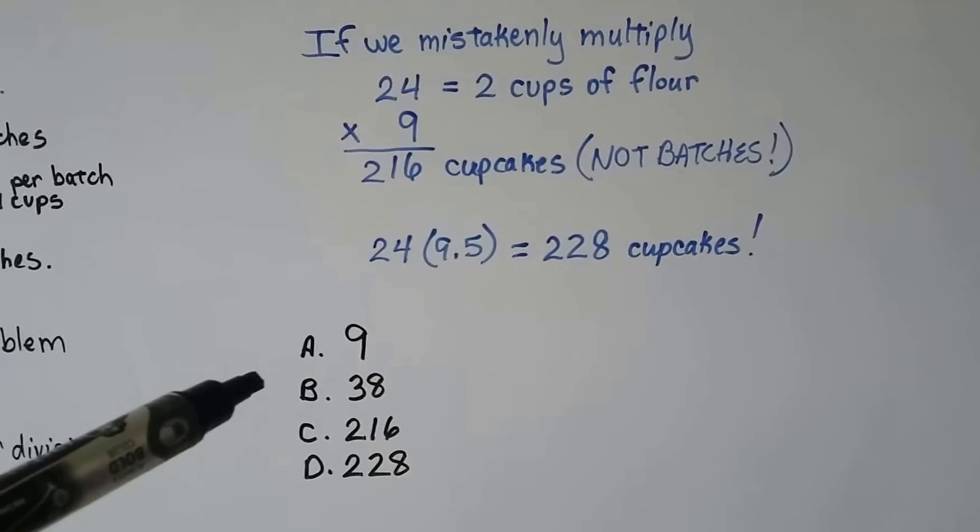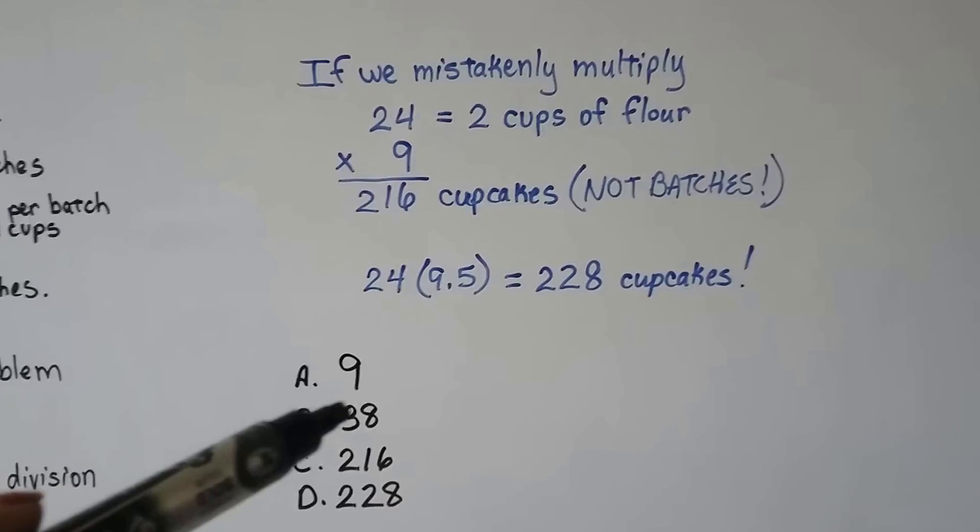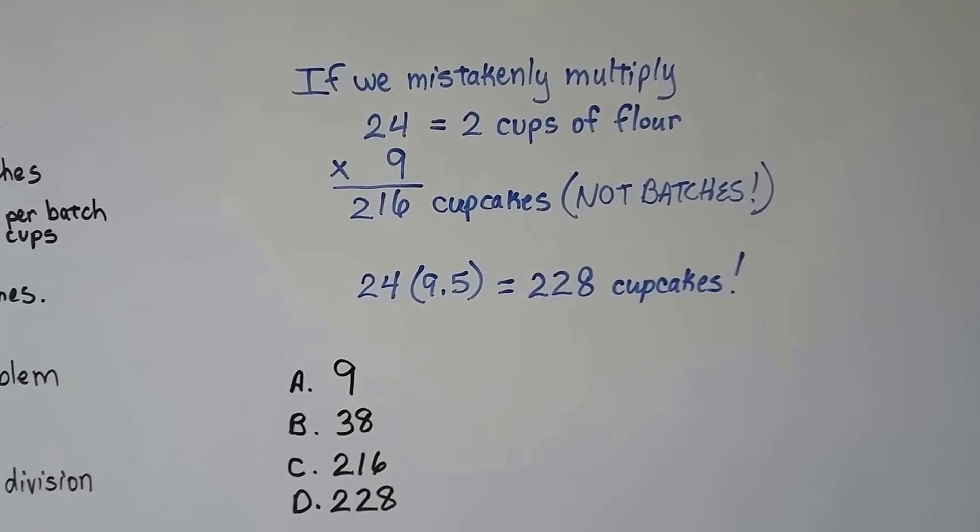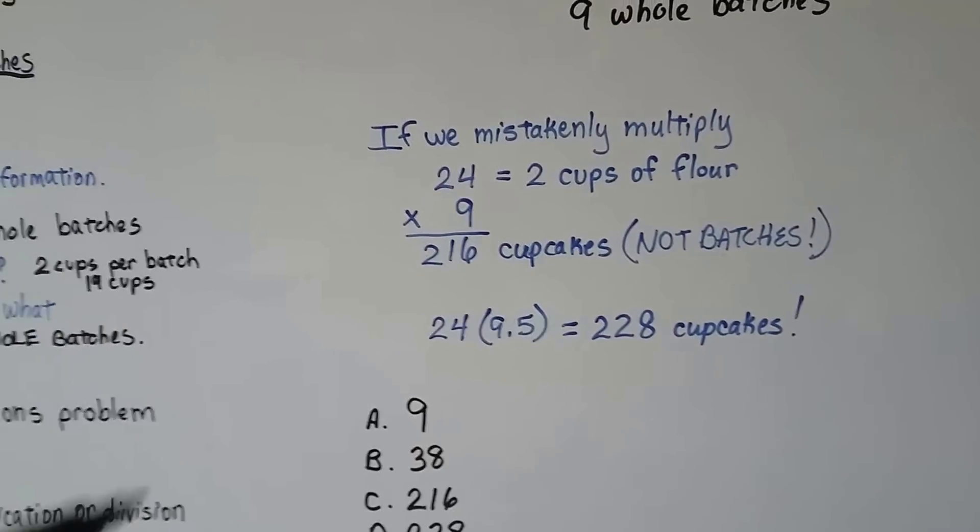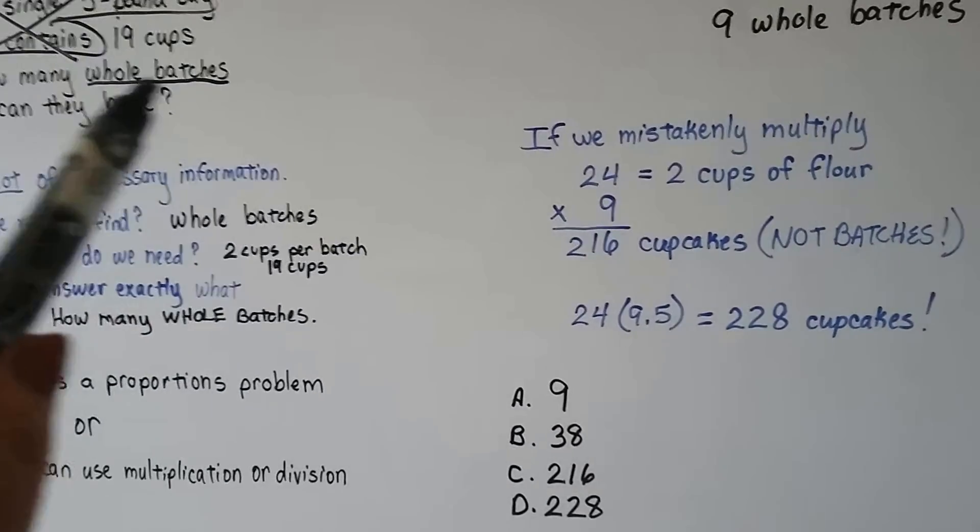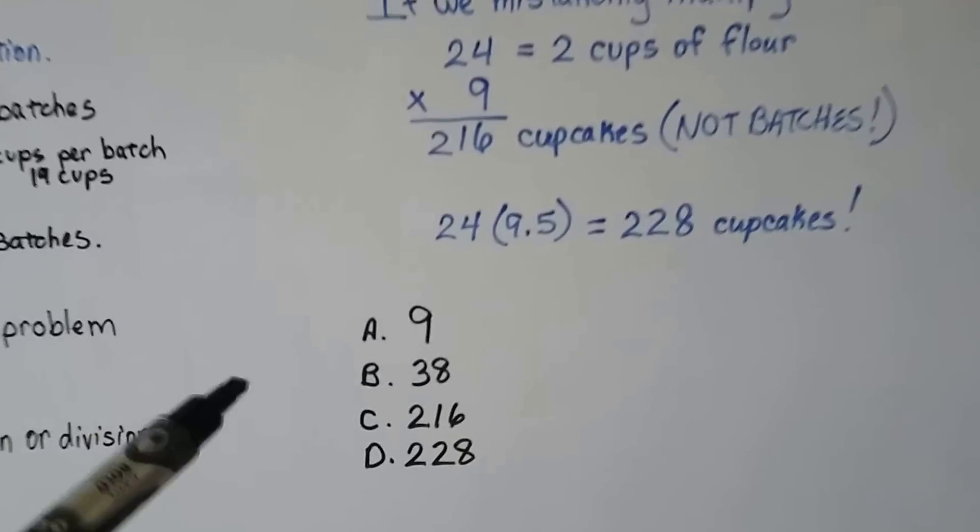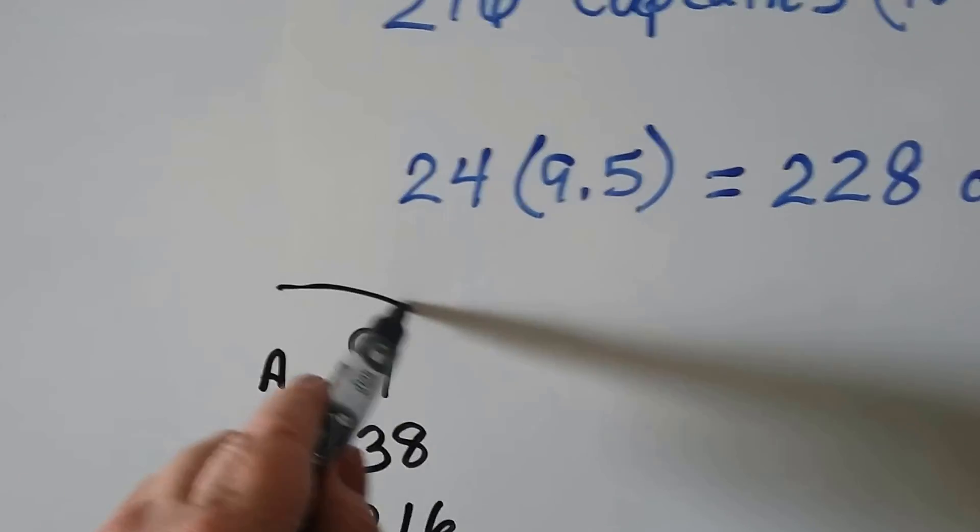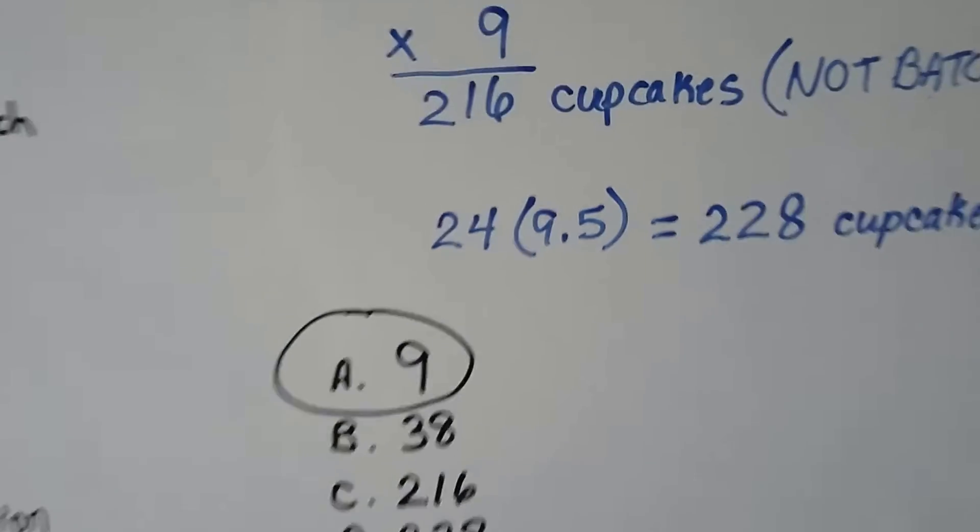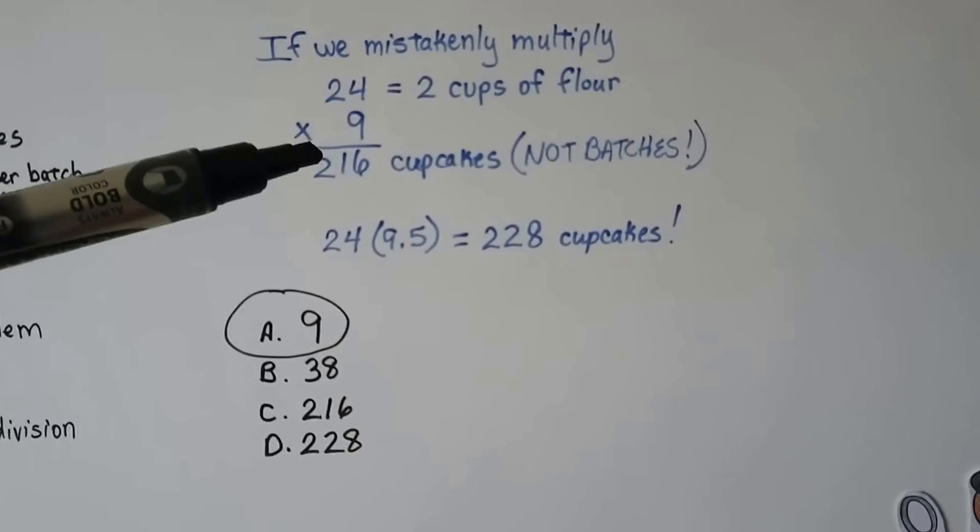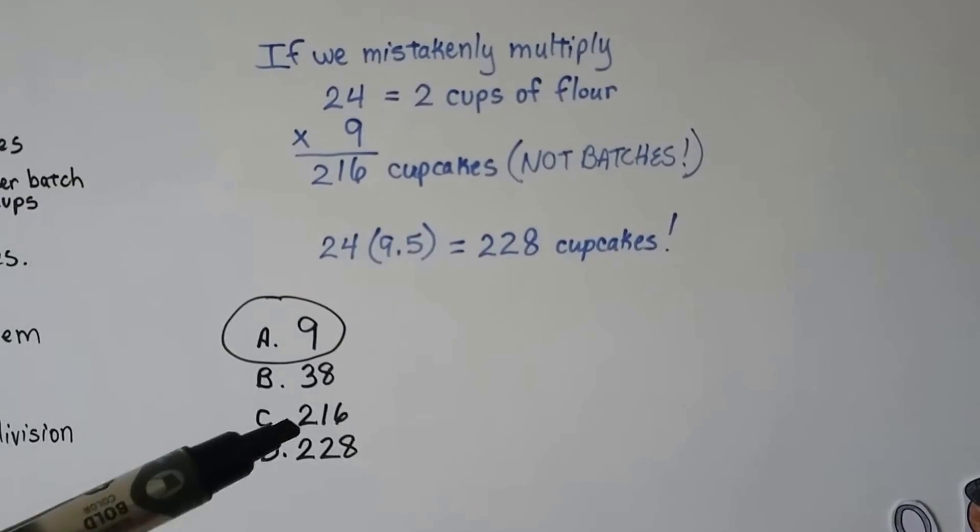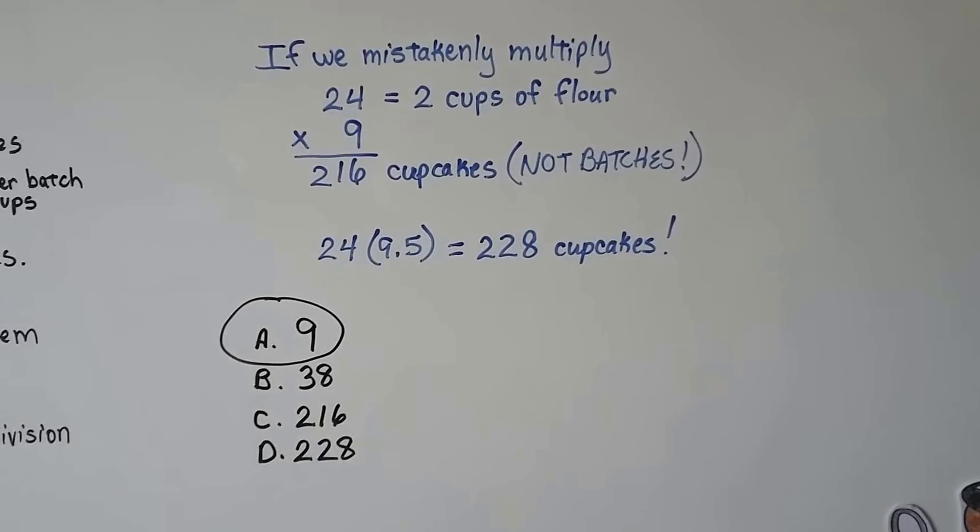Look at our answer choices. Our answer choices are a nine, a 38, a 216, or a 228. If you're not paying attention and you don't answer exactly what it asked, how many whole batches, the real answer is a nine. If we don't answer exactly what it's asking, we might make the mistake of multiplying and getting a 216 or a 228 and thinking one of those are the answers.